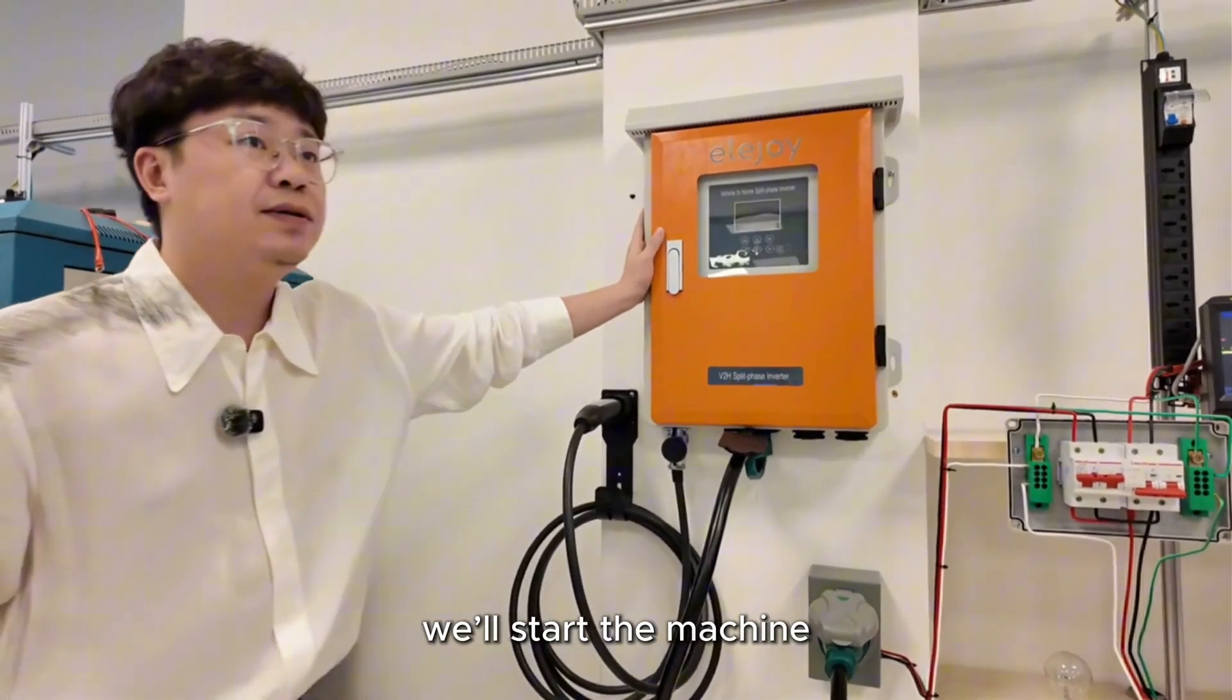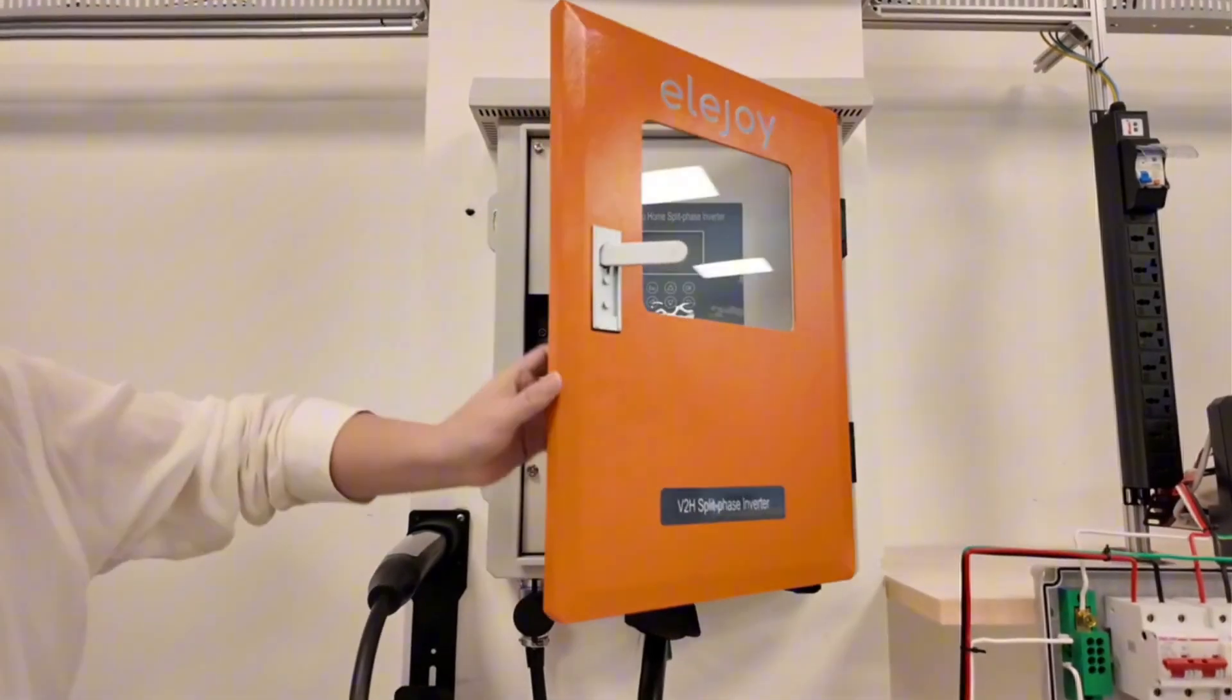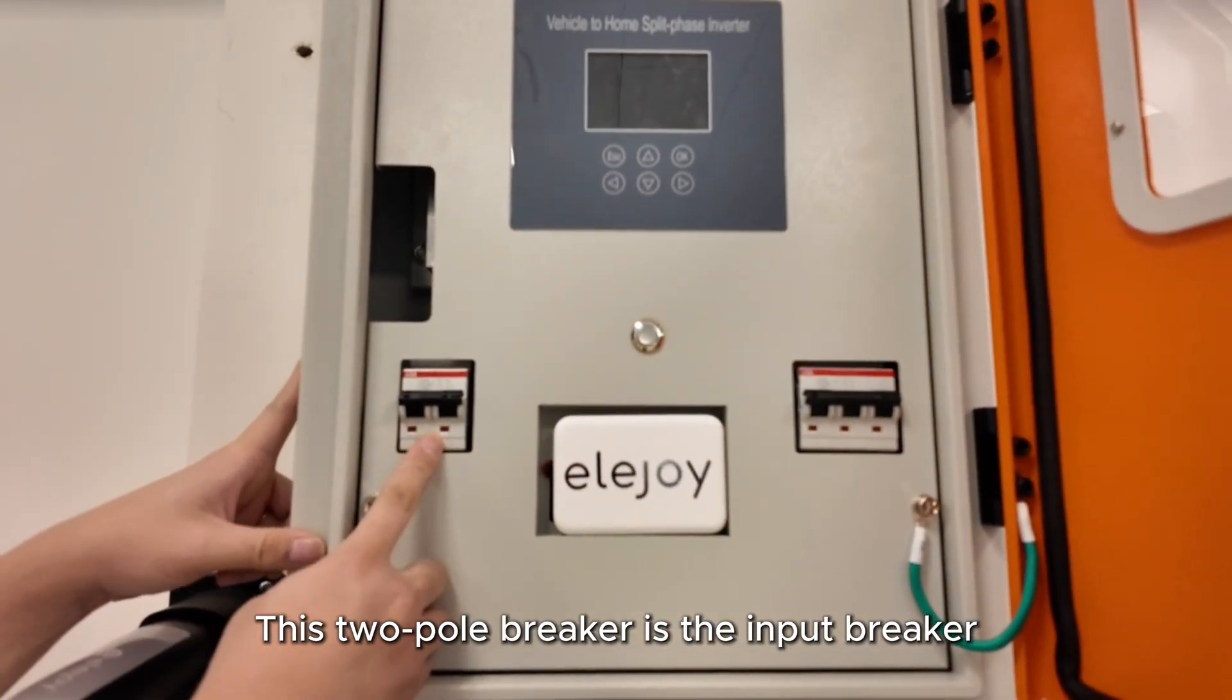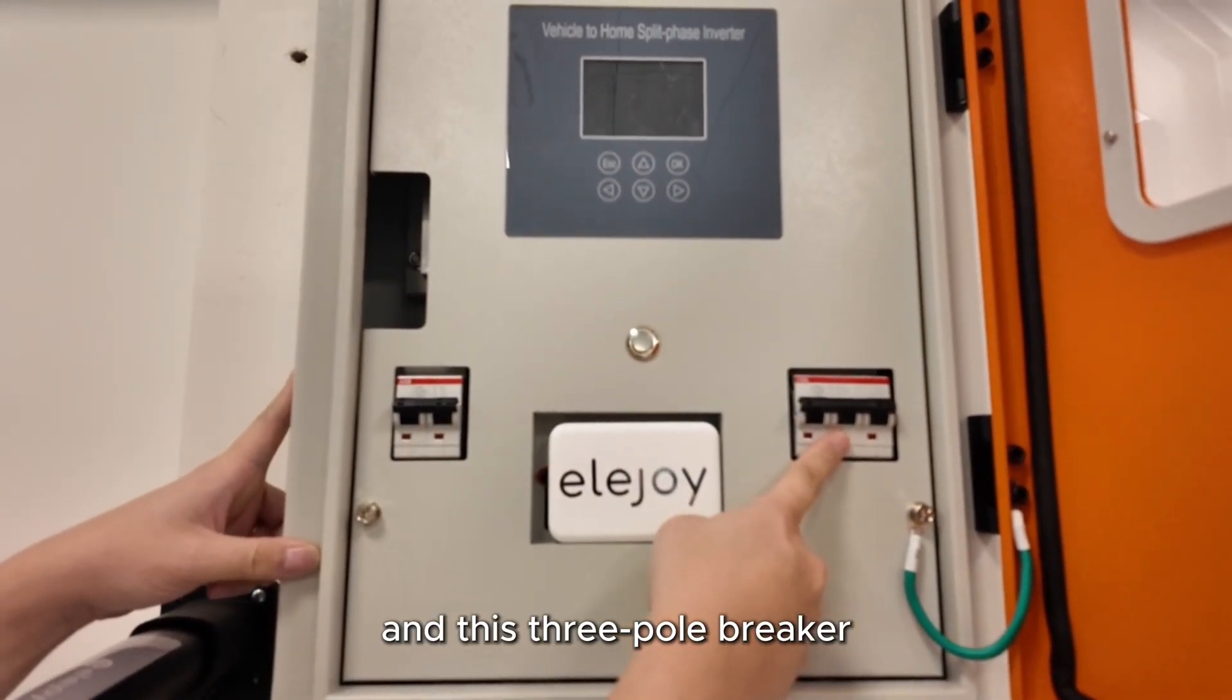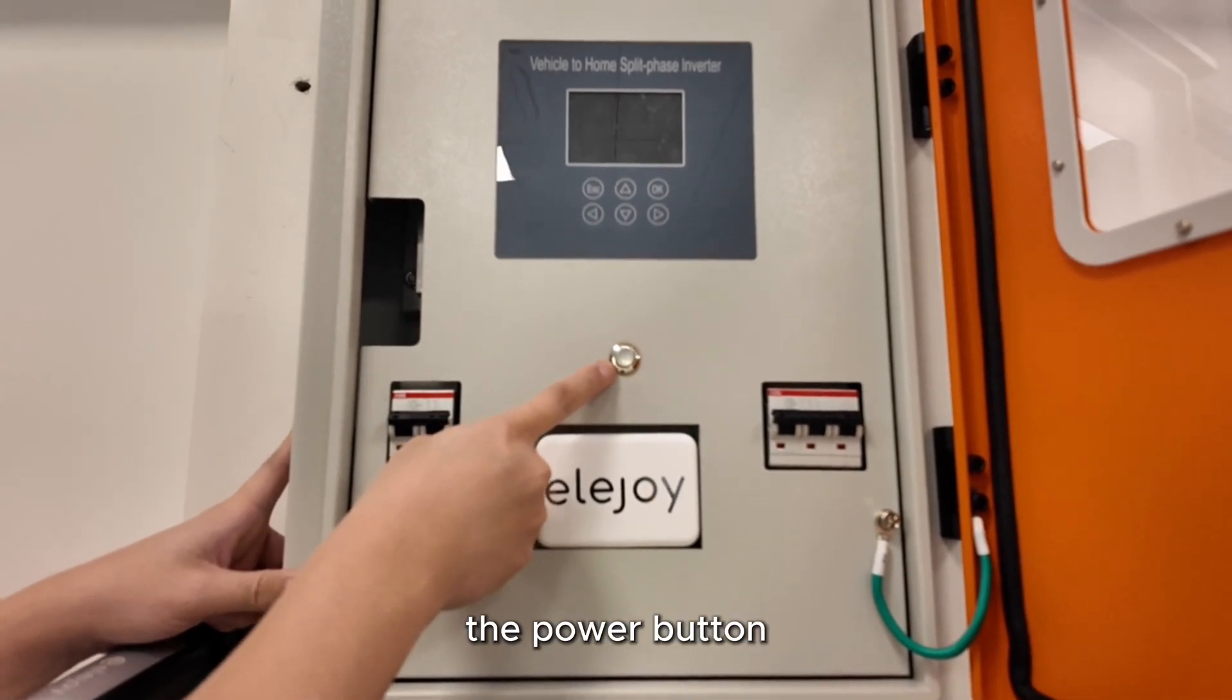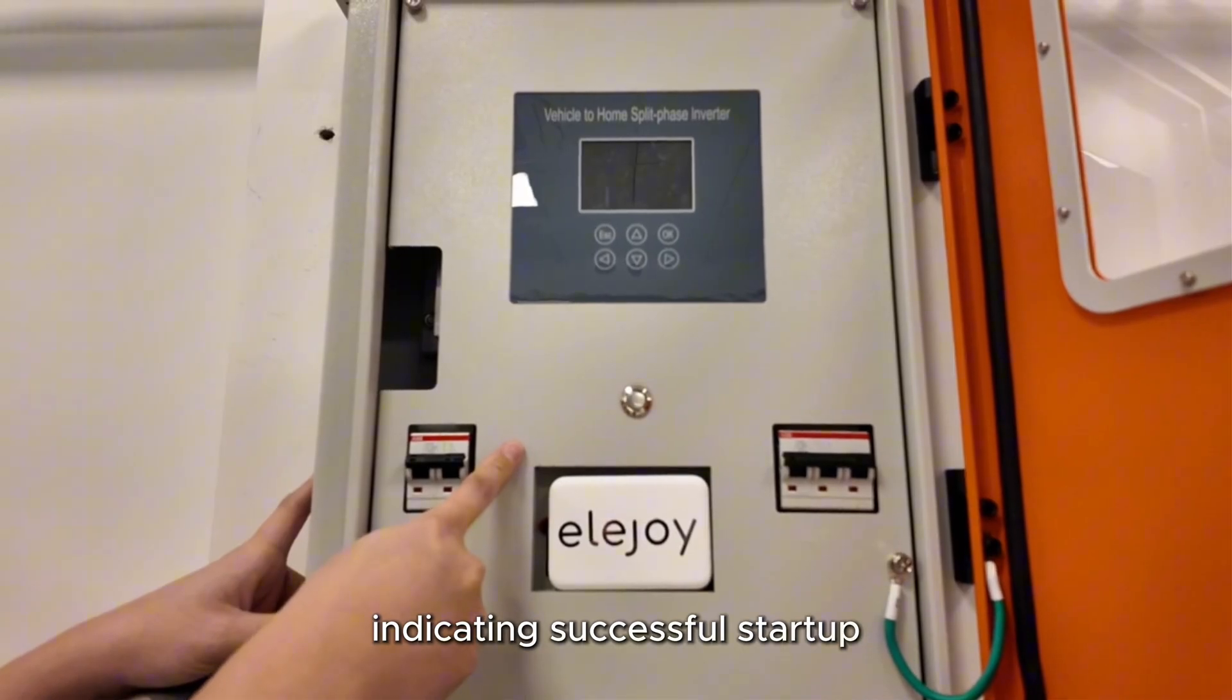Next, we'll start the machine. First, open the compartment door. Inside we'll see two circuit breakers. This two pole breaker is the input breaker and this three pole breaker is the output breaker. Then here is the power button. We press the power button. You'll hear a sound indicating successful startup.